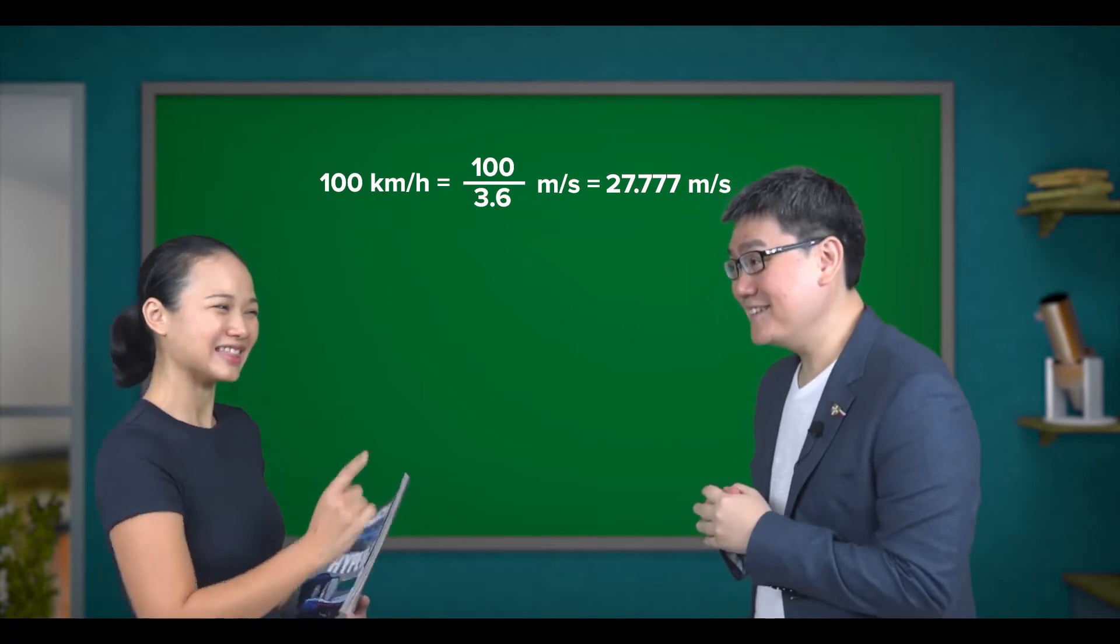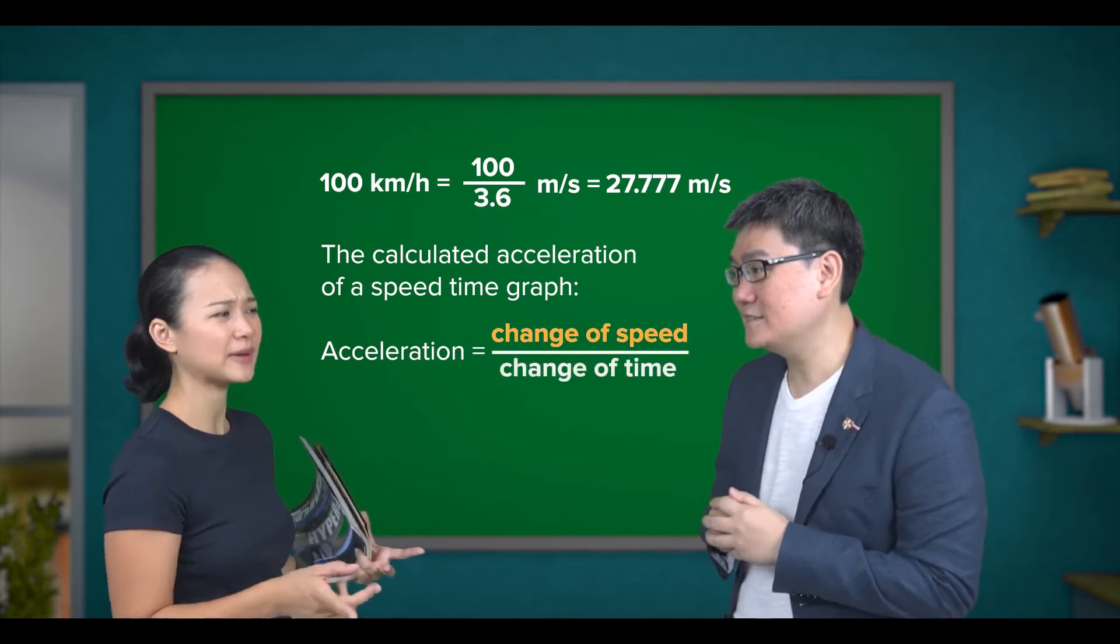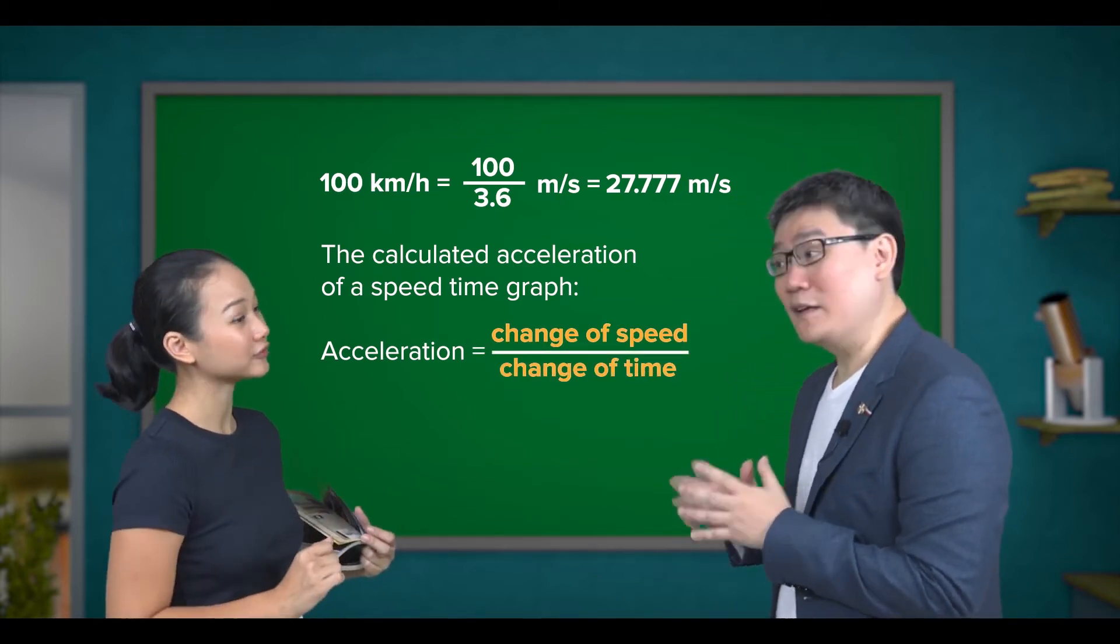Good, good. And then, the calculated acceleration of a speed-time graph is the change of speed divided by change of time, just like calculating speed in a distance-time graph. Very good.